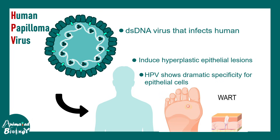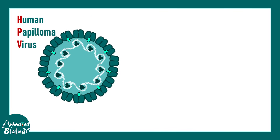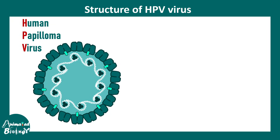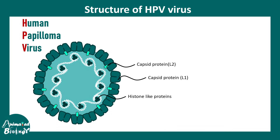HPV shows dramatic specificity for epithelial cells, so epithelial cells in different locations of the body are the primary target of HPV infection. Looking at the HPV structure in a bit more detail, it has several capsid proteins — the most important ones are capsid proteins L2 and L1.